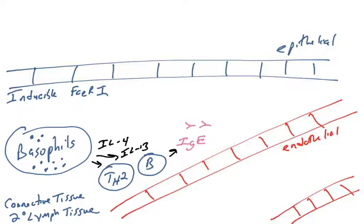But basophils somehow can sense and detect parasitic infections. And when they detect and sense parasitic infections, they will release IL-4 and IL-13, which begin the process of making CD4 T cells differentiate into TH2-effector T cells, which will then trigger naive B cells to isotype switch to making IgE. So it is believed that basophils help initiate this process of producing IgE.